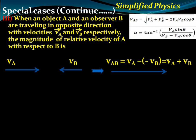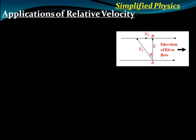When objects A and B travel in opposite directions, theta equals 180 degrees, so cos 180 equals minus one. The formula gives V_AB equals the square root of (V_A plus V_B) squared, which simplifies to V_AB equals V_A plus V_B.